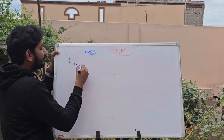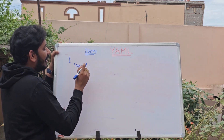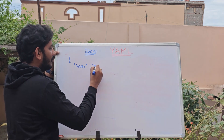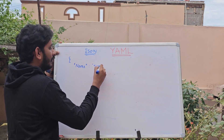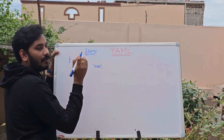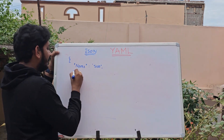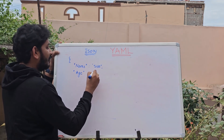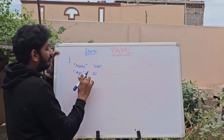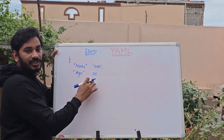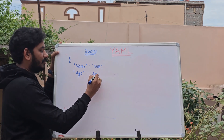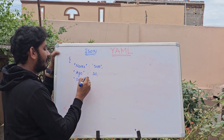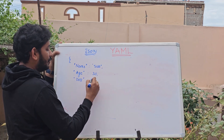Now we have JavaScript Object Notation. We open flower braces, and we have key-value pairs. We click name — key value pairs all the code.